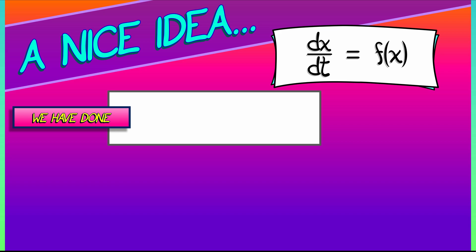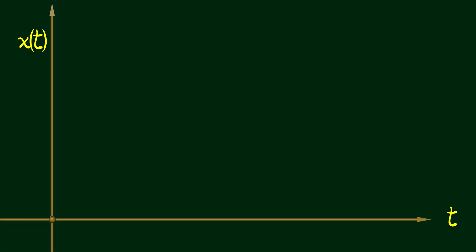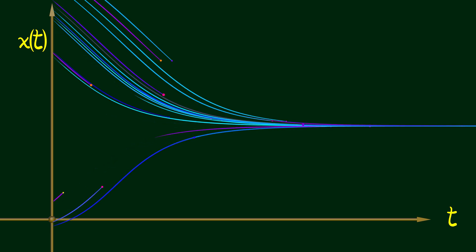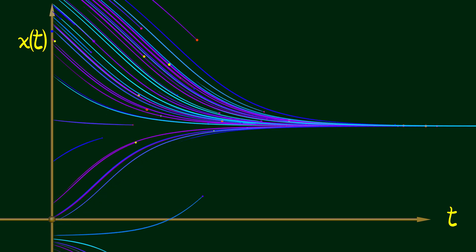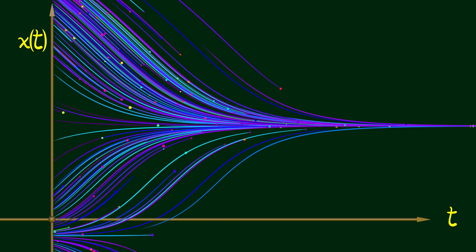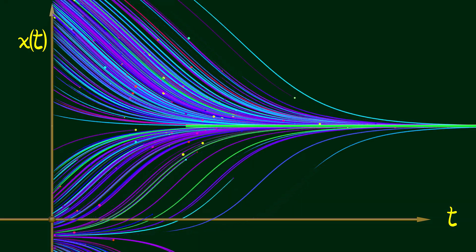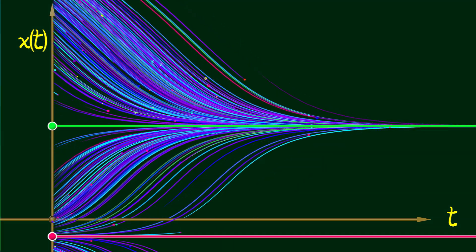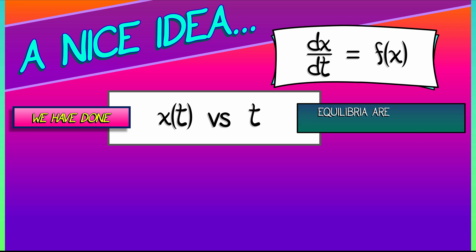We've been drawing pictures that plot x of t versus t. You've got t along the horizontal axis and x along the vertical axis, and we're plotting curves that solve the differential equation, that solve dx dt equals f of x. You can see the slopes and all that stuff really nice. Now, when we do so, what do the equilibria look like? We have observed that the equilibria are constant solutions. That means they're straight lines when we plot x versus t.